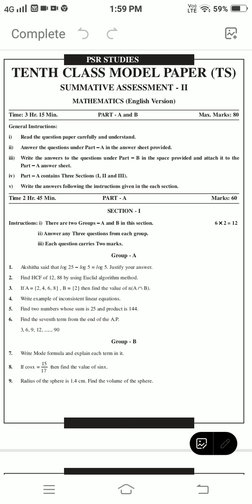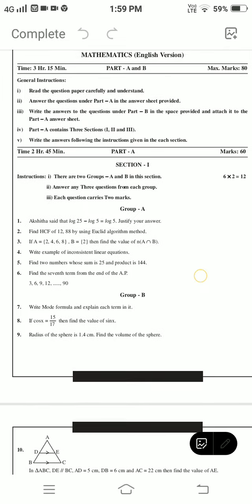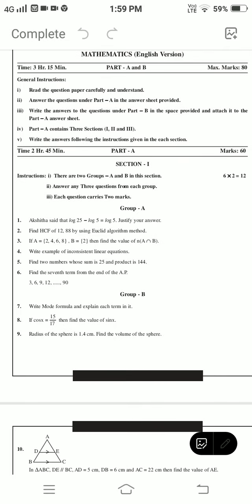Part A has 3 sections. Section 1: There are 2 groups A and B in this section. Answer any 3 questions from each group. Each question carries 2 marks. Group A 3 questions, Group B 3 questions, 6 questions total for 12 marks.